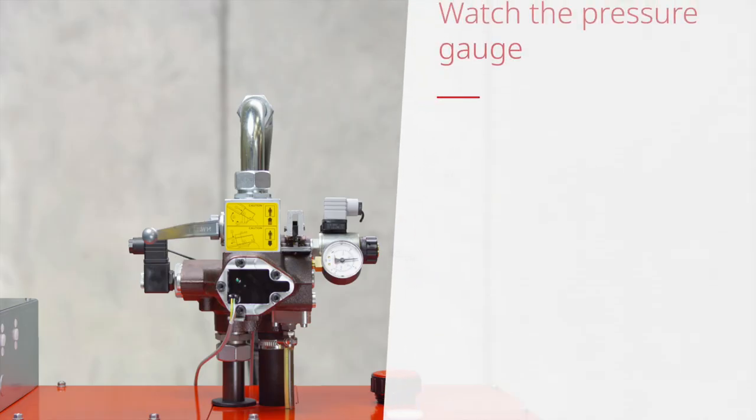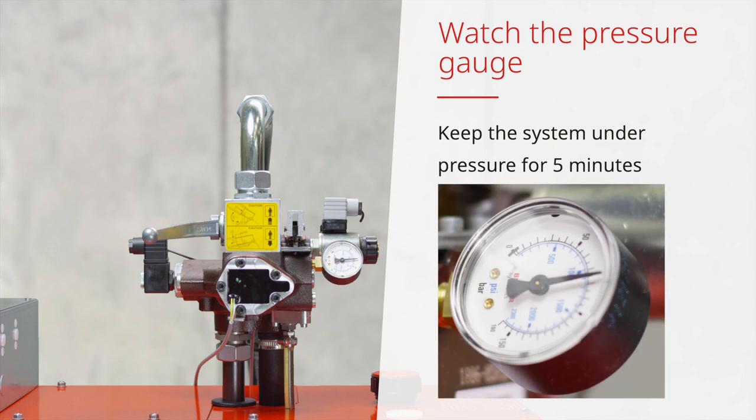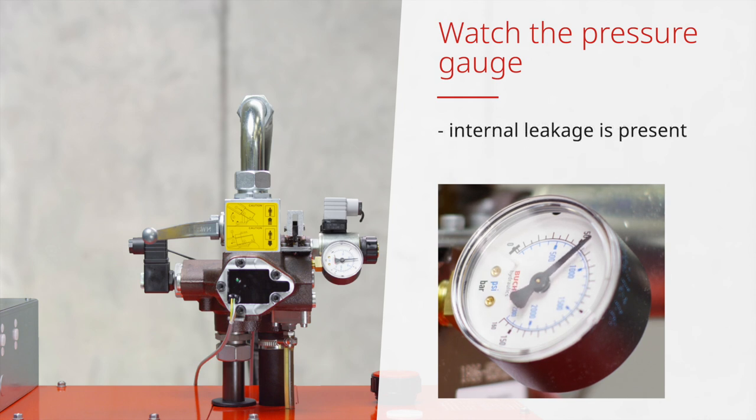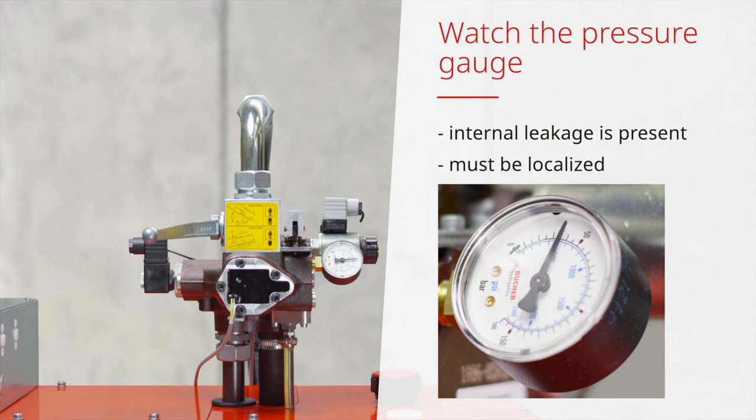Keep the system under pressure for 5 minutes and watch the pressure on the test pressure gauge. If the built-up pressure drops by half within this time, an internal leakage is present and must be localized.